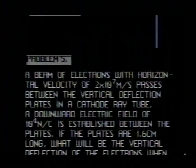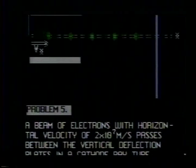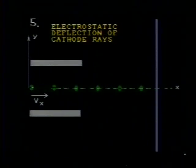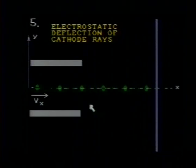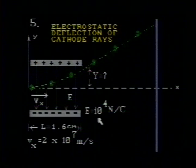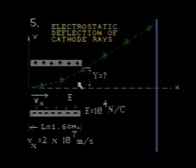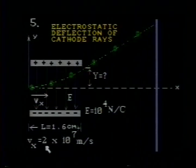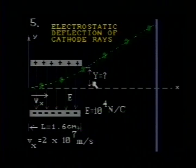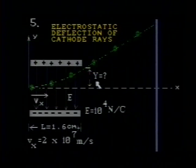Let's look at these electrons. Here we see the electrons passing between the plates before the electric field is established. If we establish an electric field of magnitude 10 to the 4th newtons per coulomb, the electrons are deflected upwards. When they have traversed the distance of 1.6 centimeters in the horizontal direction with a horizontal velocity of 2 times 10 to the 7th meters per second, they have been deflected a vertical distance y. The problem is to find this vertical distance y.